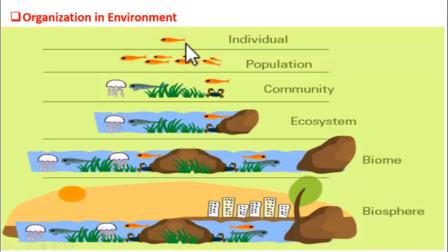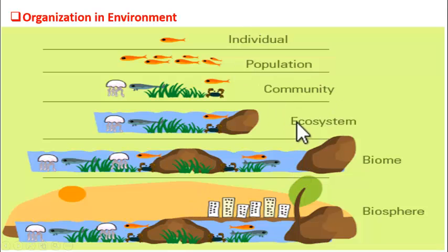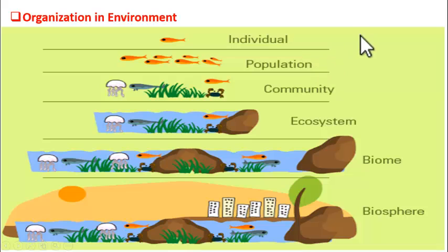If you are the individual, then this is your environment. So, you are the basic unit of environment. But of all the levels of environment, it is the ecosystem that is very important because it is here we find both living and non-living organisms. Before the ecosystem level, there is no non-living component, so those levels are not self-sustaining. It is from the ecosystem level that there are self-sustaining systems.